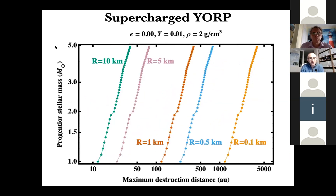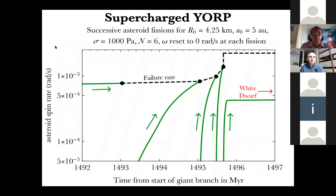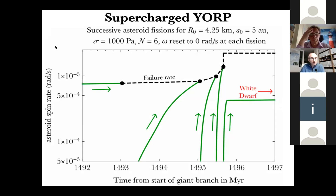Here's a plot of spin versus time since the star turns off the main sequence, for five different initial stellar masses. The horizontal black line is the breakup spin barrier. Well before these stars become white dwarfs, the asteroids are broken up into dust and grains — it takes only a few million or tens of millions of years, whereas in the solar system the process could take billions of years. A plot of stellar mass versus maximum destruction distance shows that fragments can be generated out to distances of hundreds or thousands of AU. The YORP effect creates successive generations of pulverizations, with four successive generations of asteroid fissions visible as the AGB star's luminosity increases.